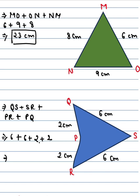So 6 plus 6 is 12, 12 plus 2 is 14, 14 plus 2 is 16. So 16 cm is the perimeter of this figure.